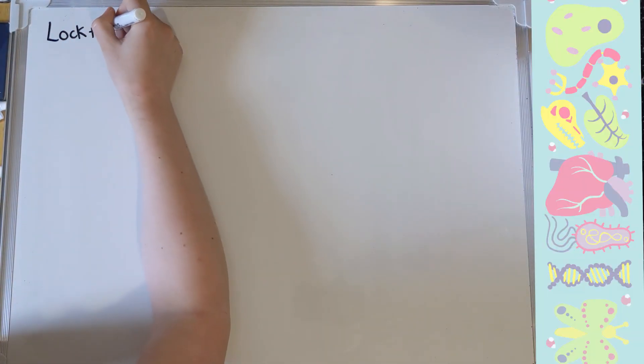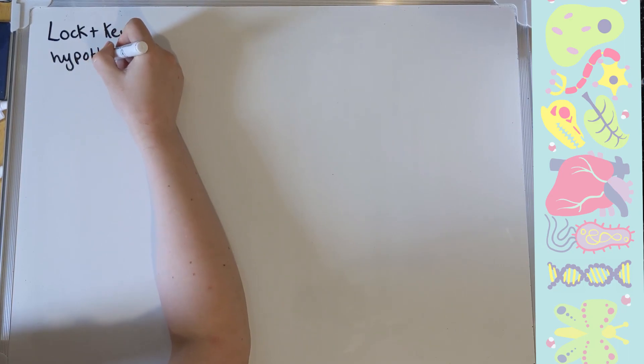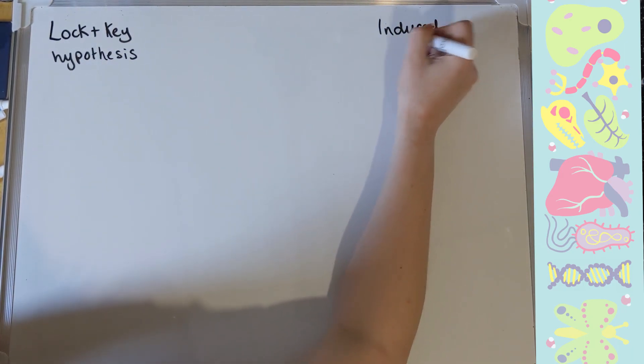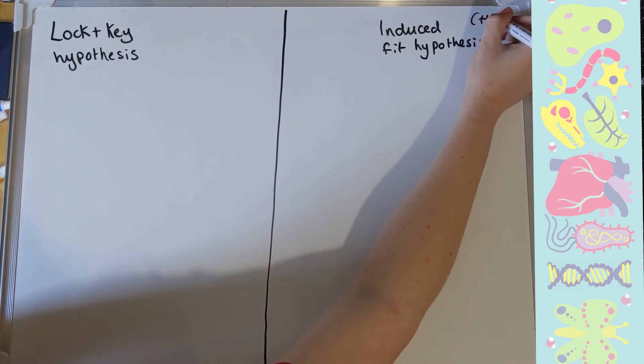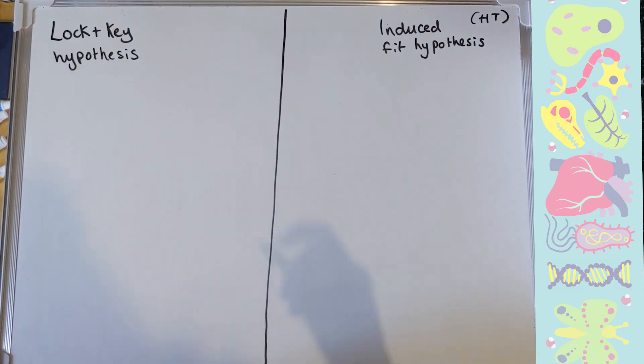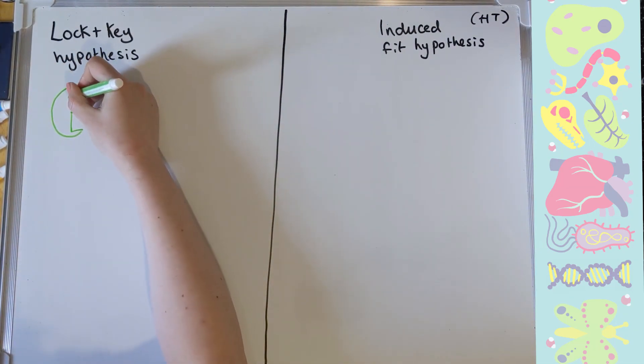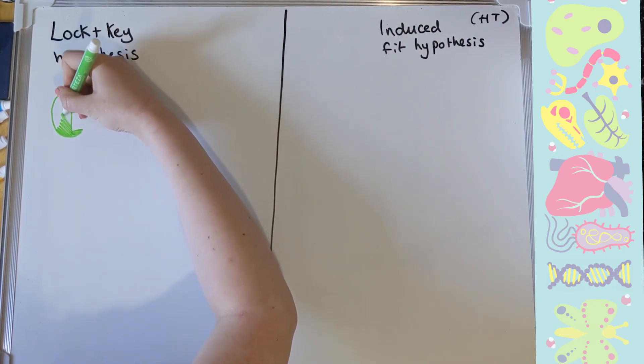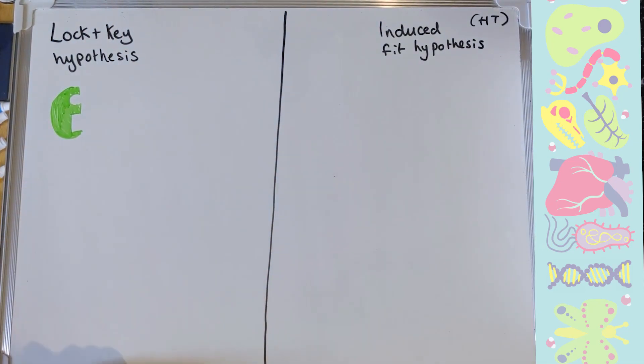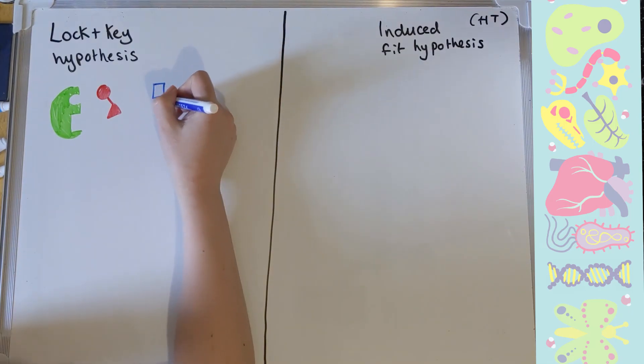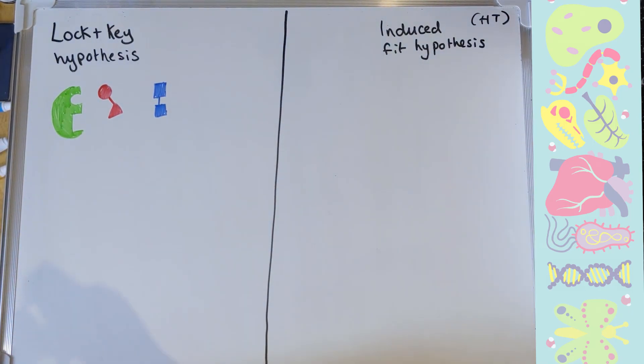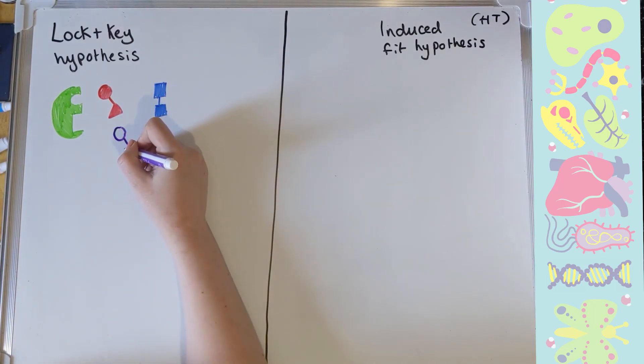Let's have a look at the lock and key hypothesis as well as something called the induced fit hypothesis, which is mainly aimed at higher tier. In the lock and key hypothesis, it's to do with the shapes of the enzymes and the shapes of the substrates and how they fit each other exactly like a lock and the right key should. In my diagram, the big green blob is our enzyme, and I'm drawing a number of substrates as well. If you look at the shape of them as I'm drawing them out, see if you can guess which of the four substances you think are going to fit into that enzyme and be sped up, broken down by it.